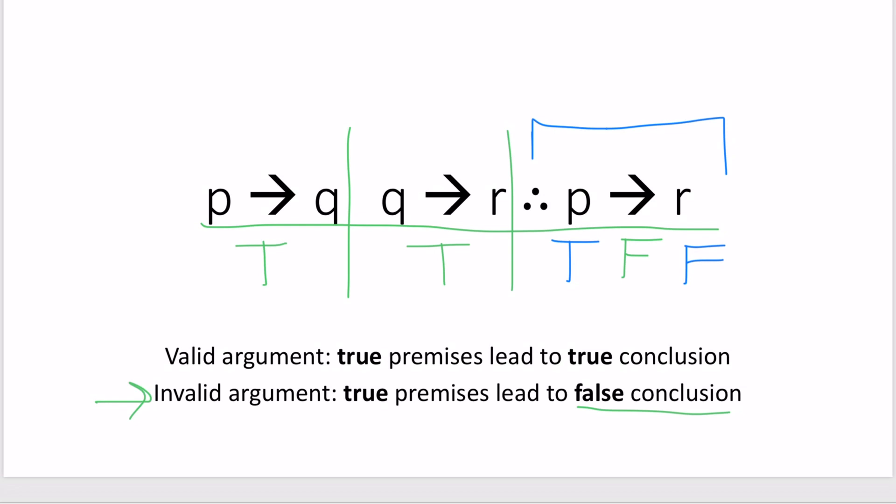Now, we will take these truth values and fill them in with the other p's and r's in the argument. So, we know we've got a p right here. We will fill in the same value that we have for this p, so we will fill in true. And we have an r right here, and we'll fill in the same value we have for this r, which is false.